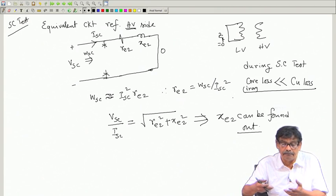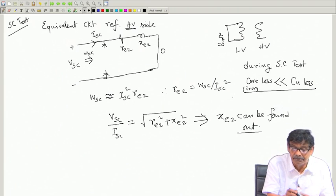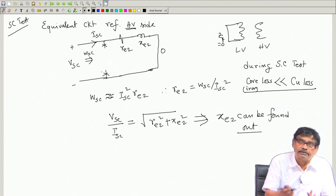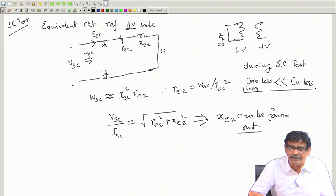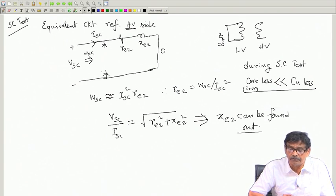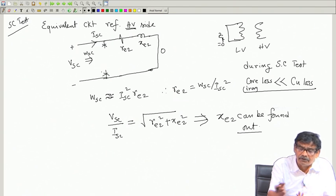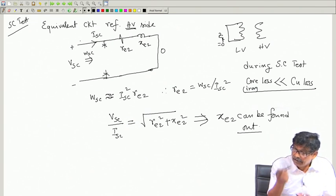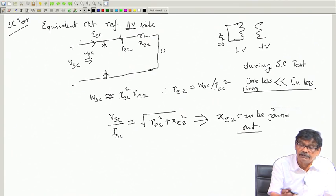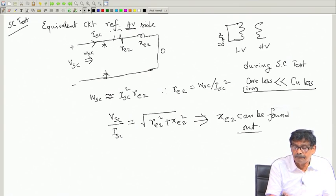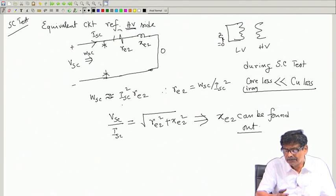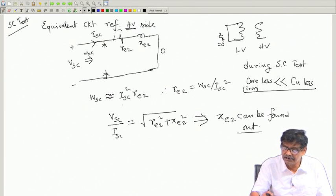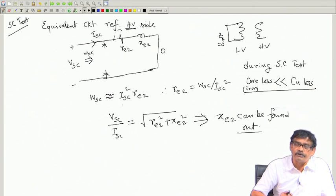In the equivalent circuit, neglecting core loss means you can neglect the shunt branch — both the magnetizing current and the core loss component of current can be neglected. Whatever power is drawn, the wattmeter reads real power only. Real power loss takes place in RE2: ISC² × RE2 and VSC / ZE2 — these two can be found out.